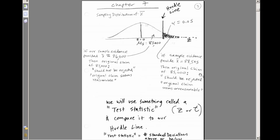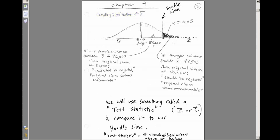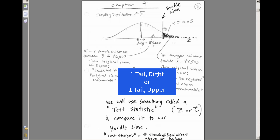Let's remind ourselves of Chapter 7, where we talked about the sampling distribution of x-bar — the distribution of all x-bars. We can take a single sample, compare it to this sampling distribution of x-bar, and learn how to pick a hurdle line. Anything beyond the hurdle, we reject the original claim and accept the alternative. Anything less than the hurdle, we fail to reject. This is a one-tail-right test.